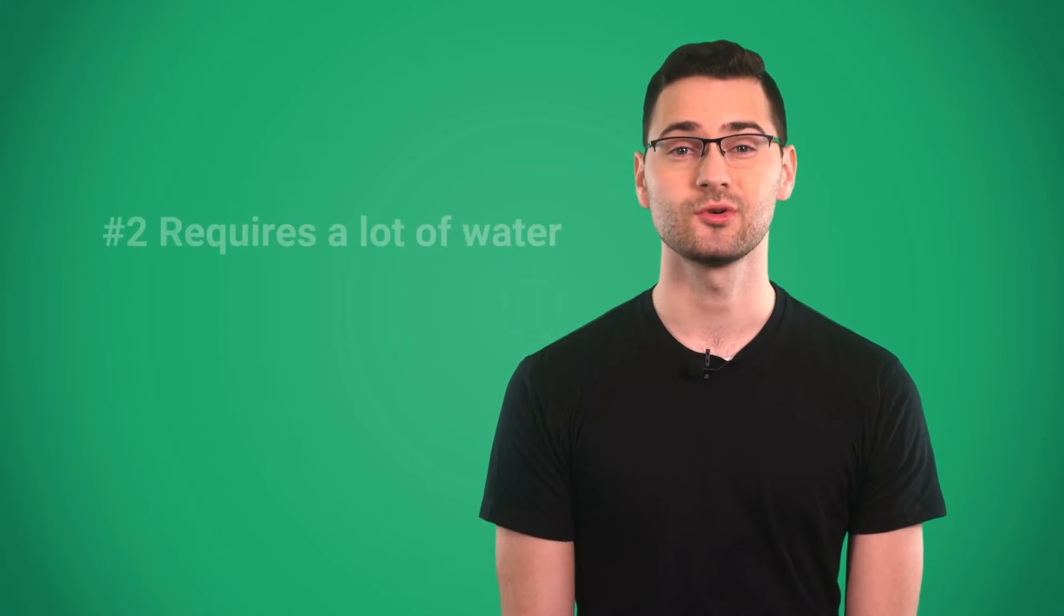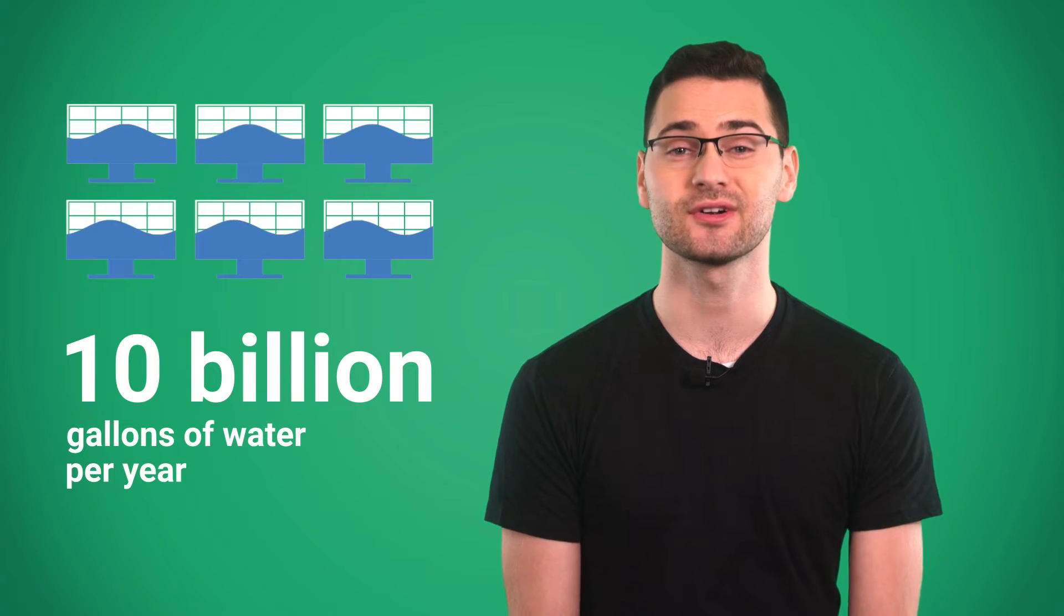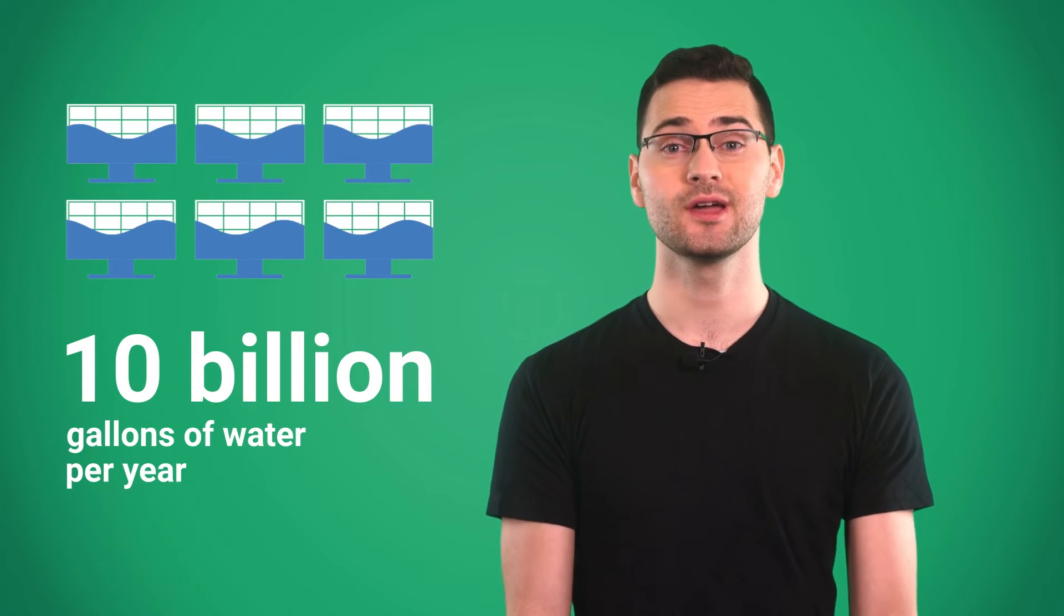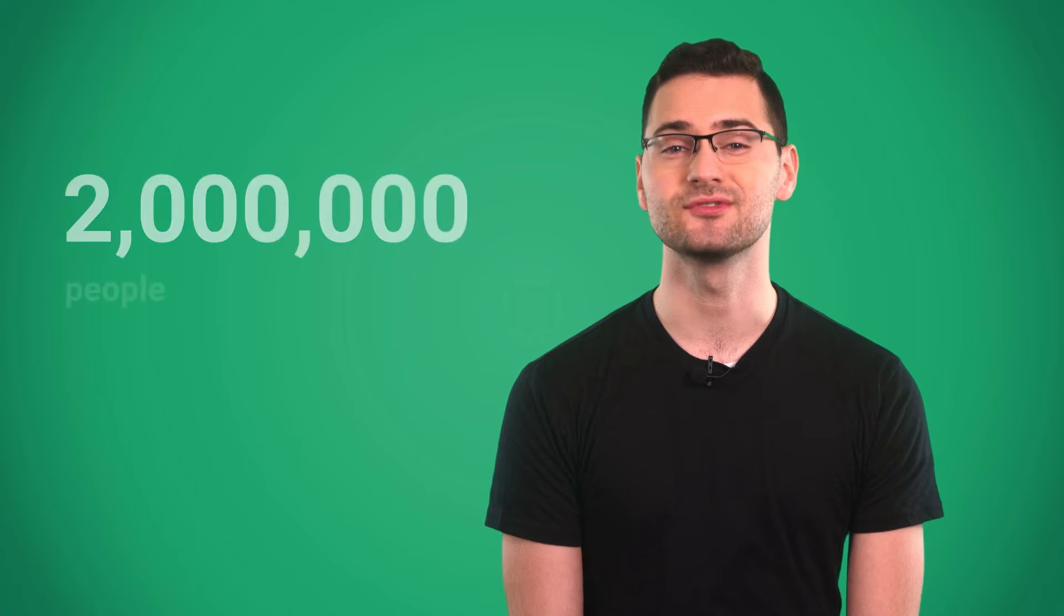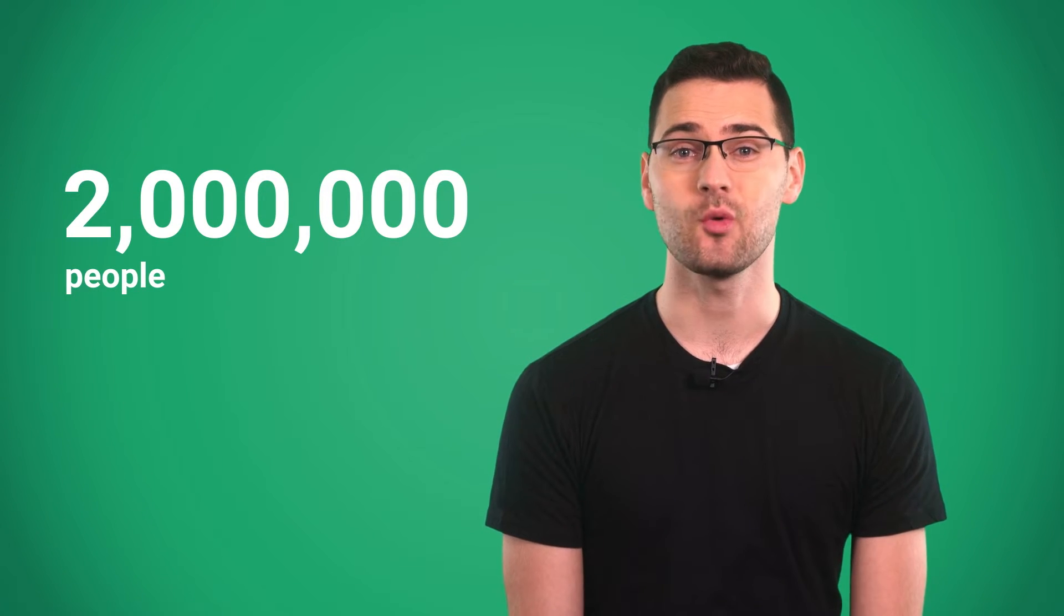The second problem with solar is the high water footprint. Experts from MIT calculated that people use over 10 billion gallons of water per year for cleaning solar panels around the world. That's enough water for the yearly needs of 2 million people. You also have to filter this water because you don't want anything left on a panel when it dries. Filtering alone makes up about 10% of the operating costs of solar installations.